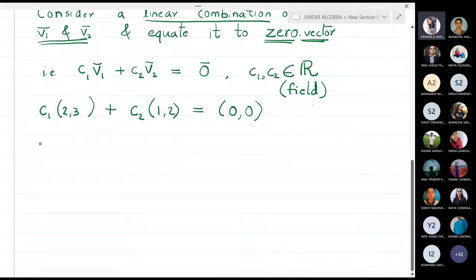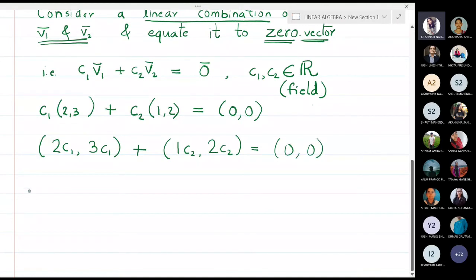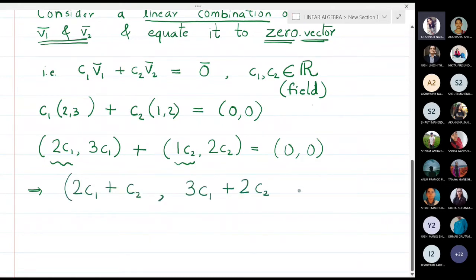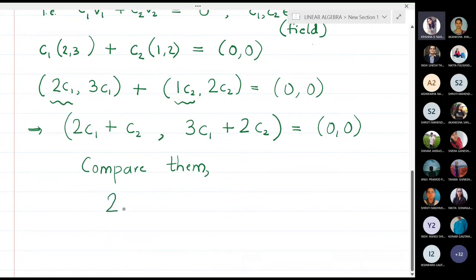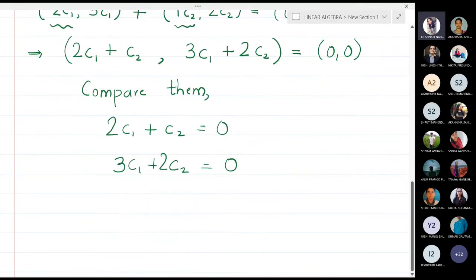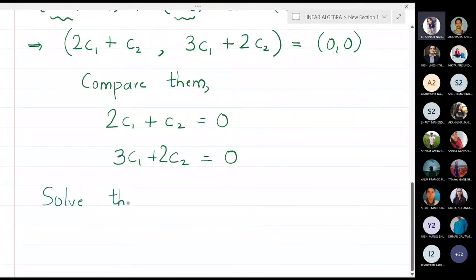This means 2c1 plus c2 comma 3c1 plus 2c2 is equal to (0,0). When I add the first components together and the second components together, I get 2c1 + c2 = 0 and 3c1 + 2c2 = 0. Comparing these two vectors, I understand the first coordinate is 0 and the second coordinate is also 0.